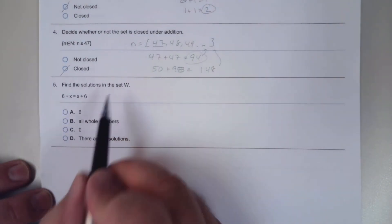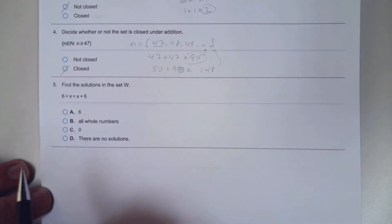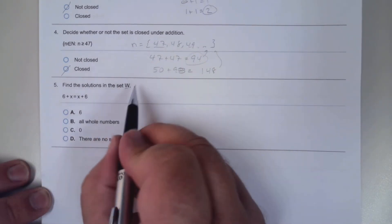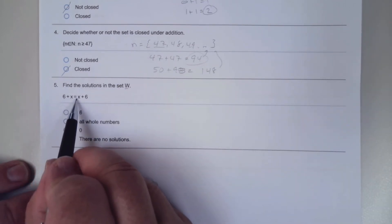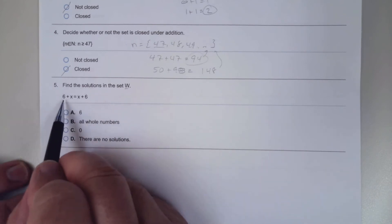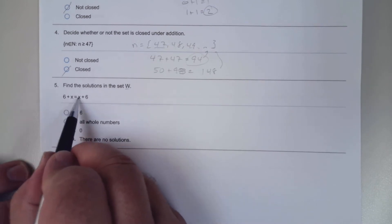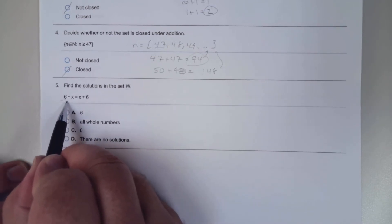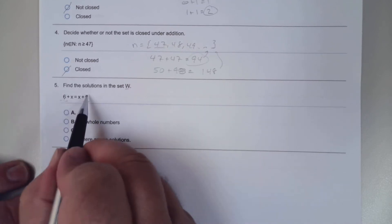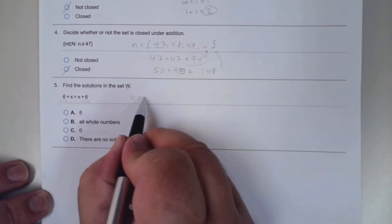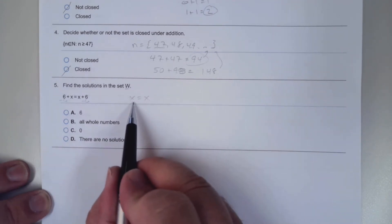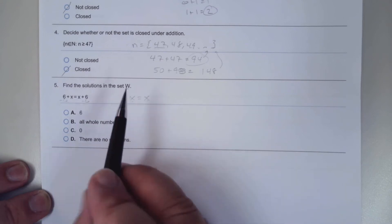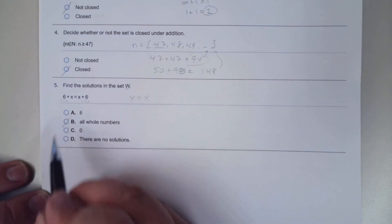Find the solutions in the set W. Remember set W is the whole numbers. 6 plus x equals x plus 6, remember that's the commutative rule. Now if we solve for x, let's get rid of the sixes from both sides. We subtract 6, we get x equals x. So that means any number I put in there will work, so the answer is all whole numbers.